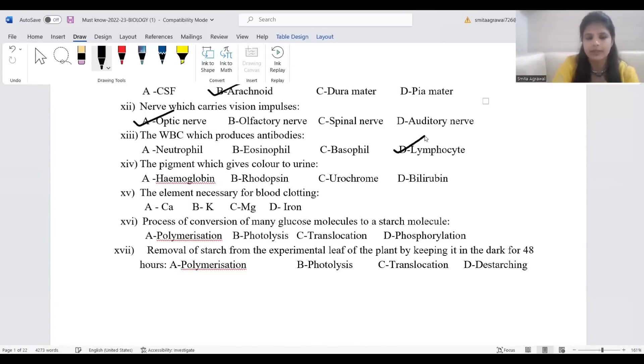The pigment which gives color to urine, the correct answer is urochrome. The element necessary for blood clotting is calcium. Potassium is for stomatal opening and closing, magnesium is in chlorophyll, iron is in hemoglobin.